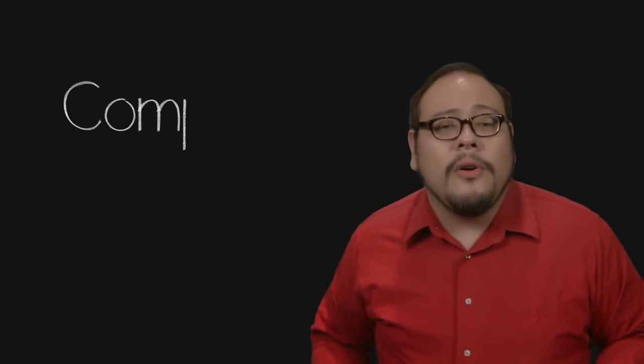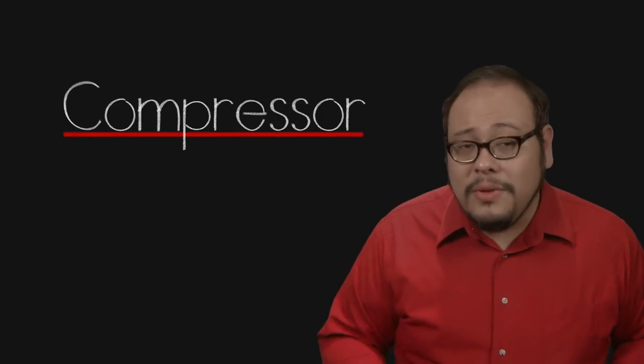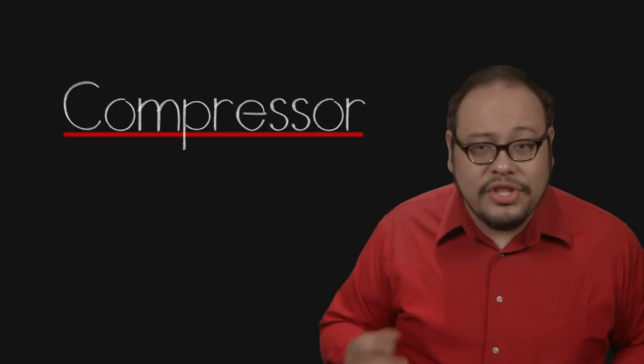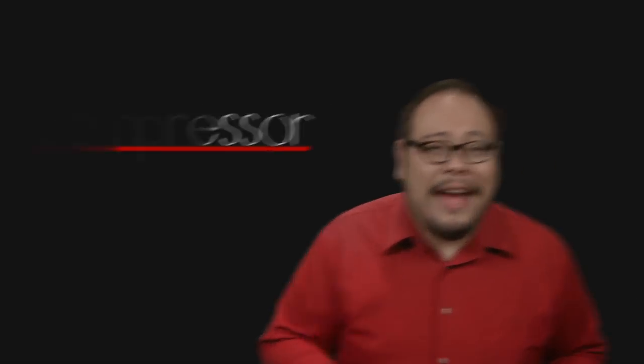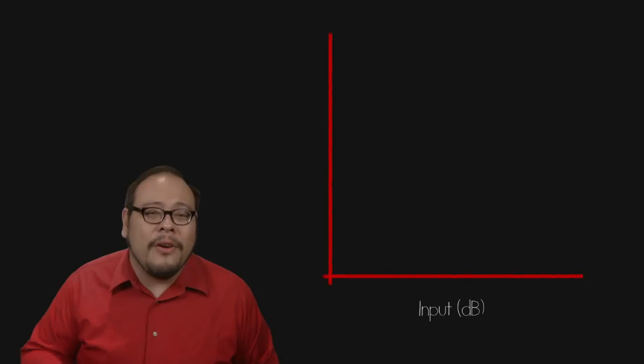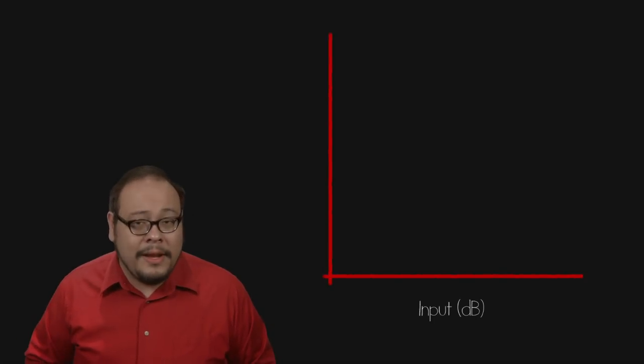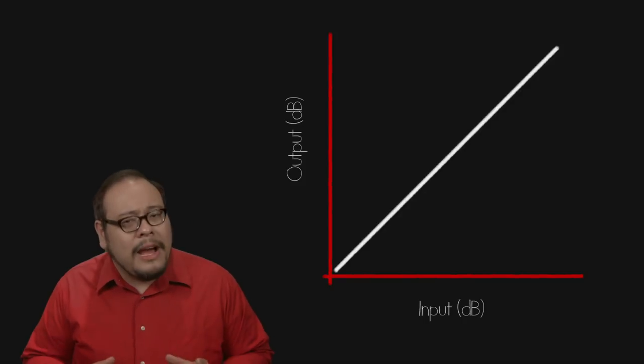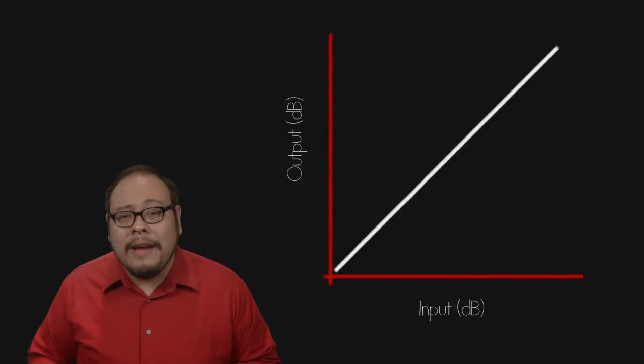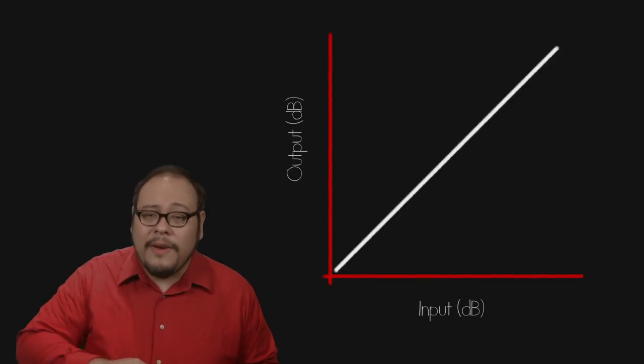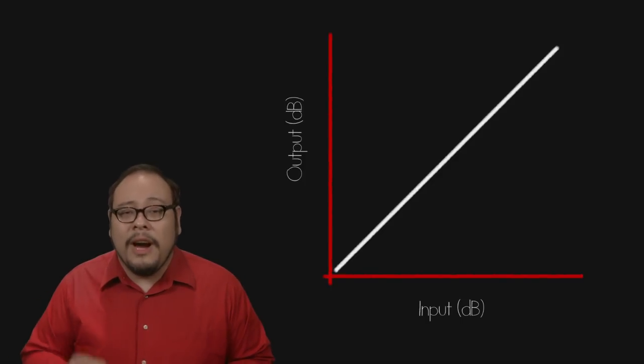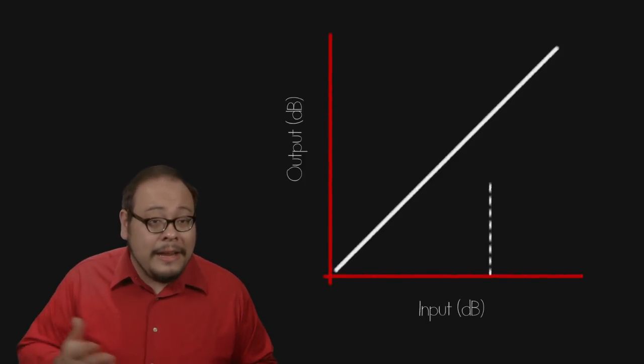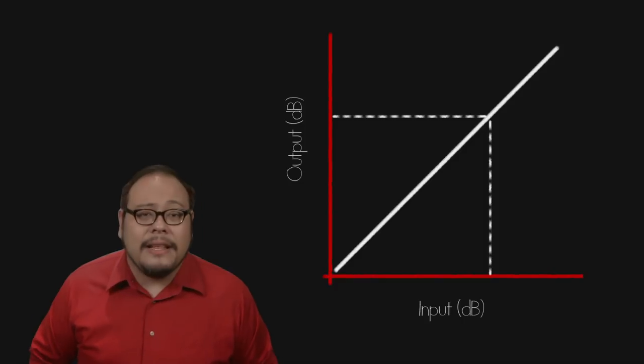This is the work of a tool called the compressor. To visualize what a compressor does, let's use a graph. On the x-axis we'll put our input level in decibels and on our y-axis will be our output level. If we don't apply any compression at all, we have a straight line curve going 45 degrees up the chart with a slope of 1. For any given input, the output will be exactly the same.